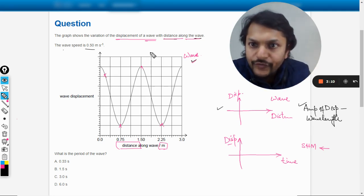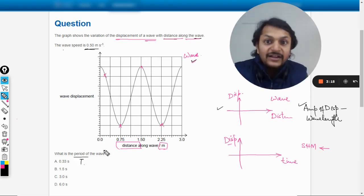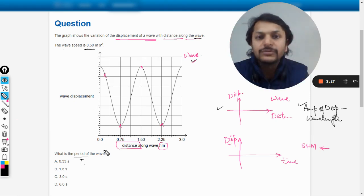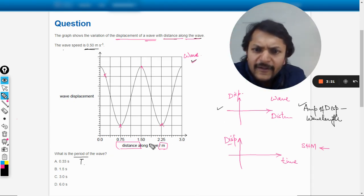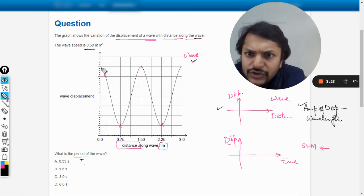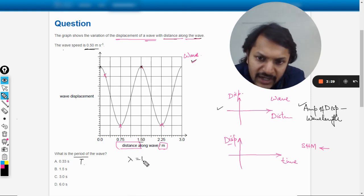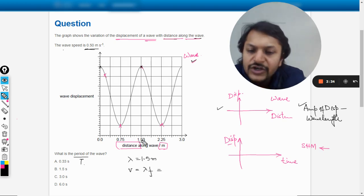So what do we want to find? The wave speed is given and you want to find the time period. So directly you cannot find time period from the graph. From the graph you can find the wavelength. So let us do it first. So what is the wavelength now? So you can see it started from here, it went up to here. So the wavelength is 1.5 meters. So lambda is 1.5.